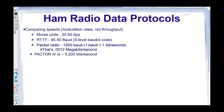The various PACTOR modes one through four are faster — PACTOR 4 is the fastest at around 5.8 kilobits per second. VARA is becoming increasingly popular. Some guys are hacking on radios and SignaLinks on FM and have reported as much as 20 kilobits per second, which is a significant improvement.